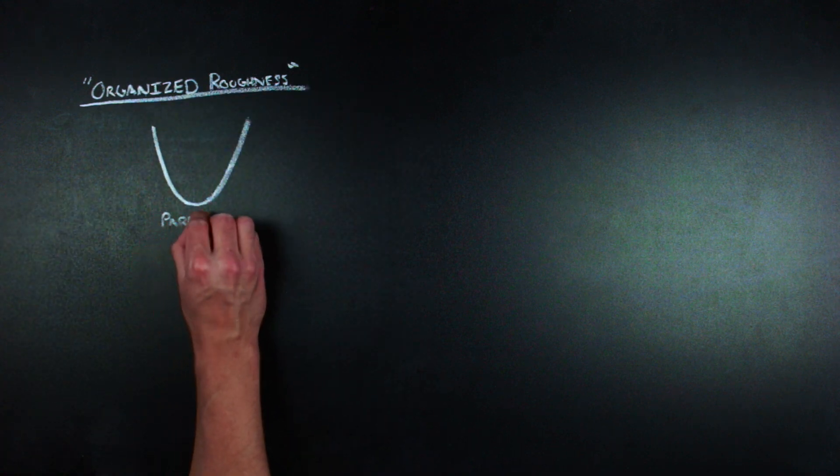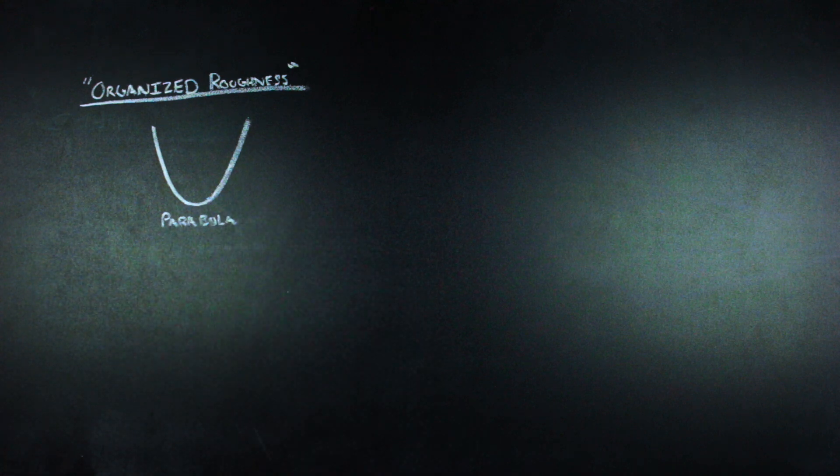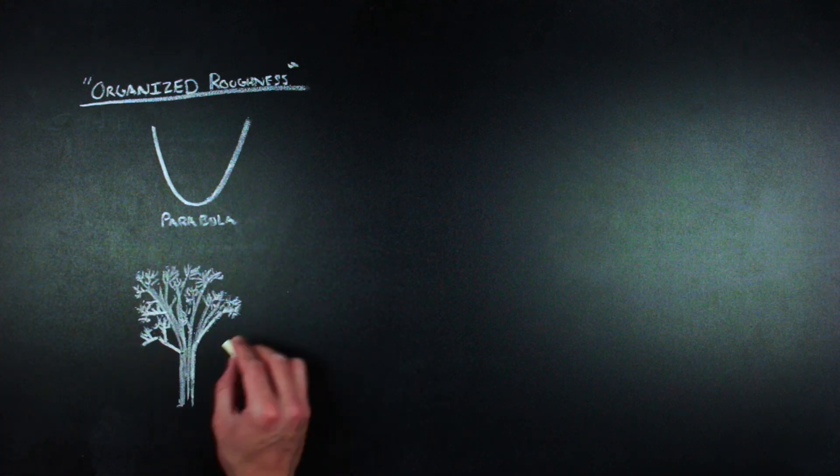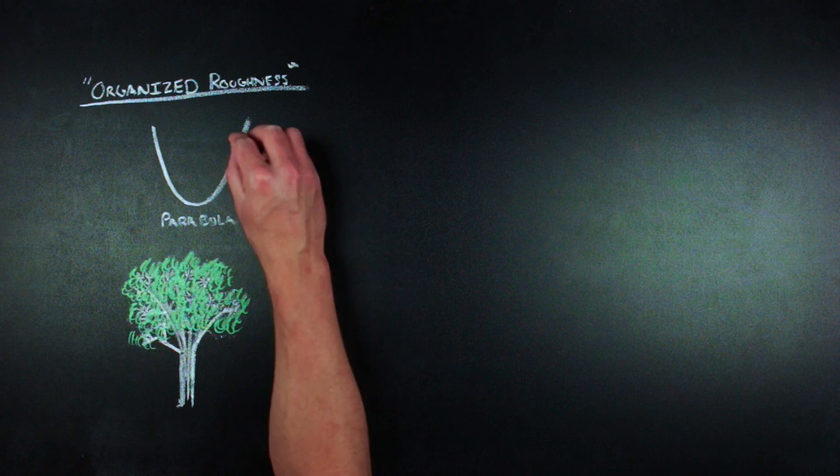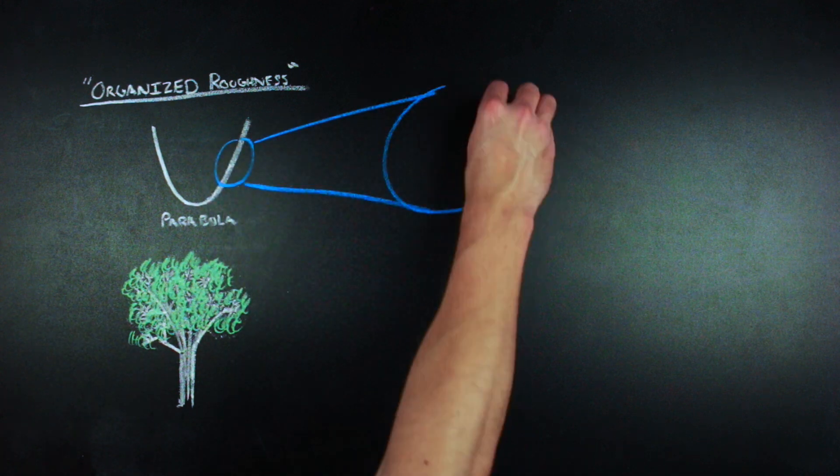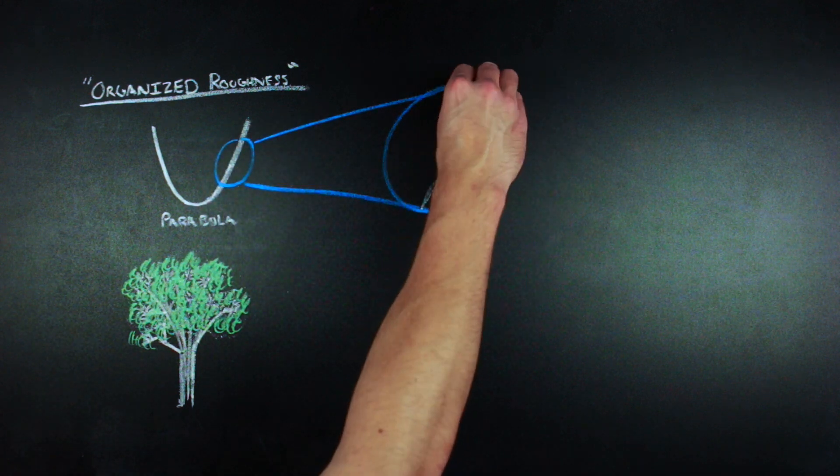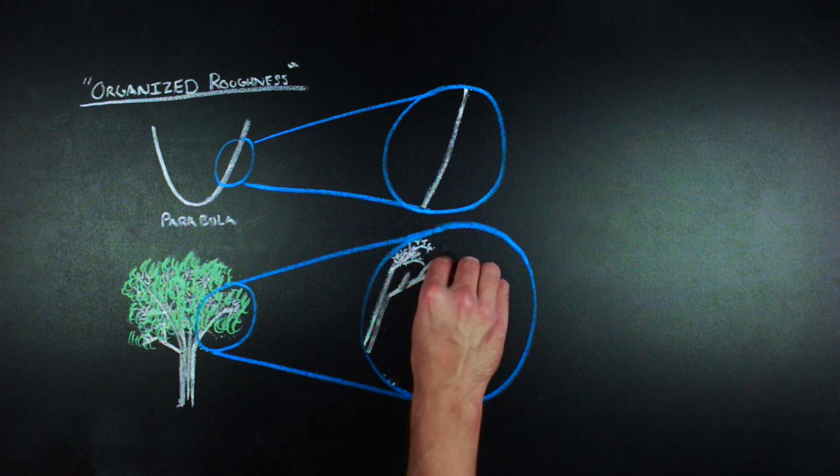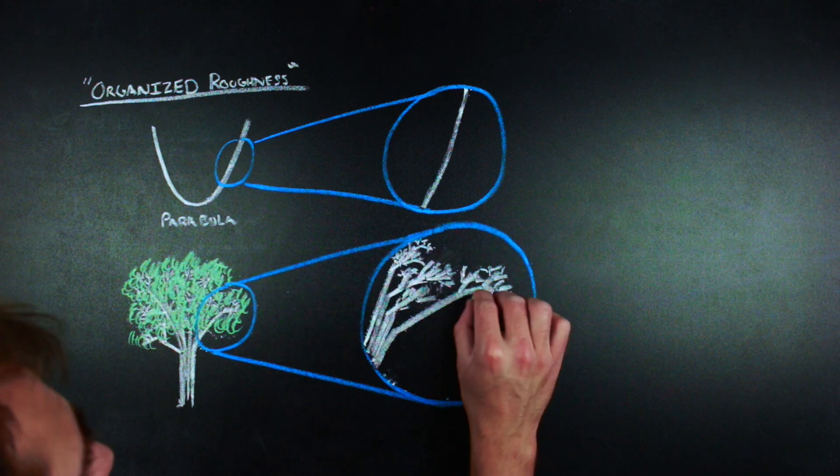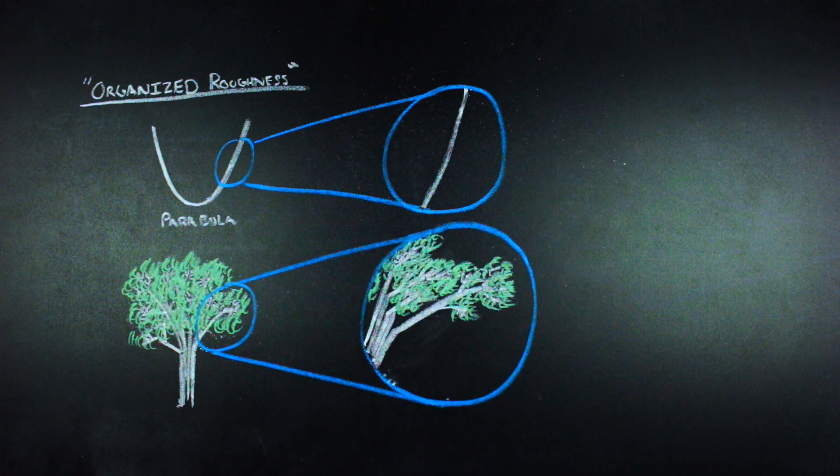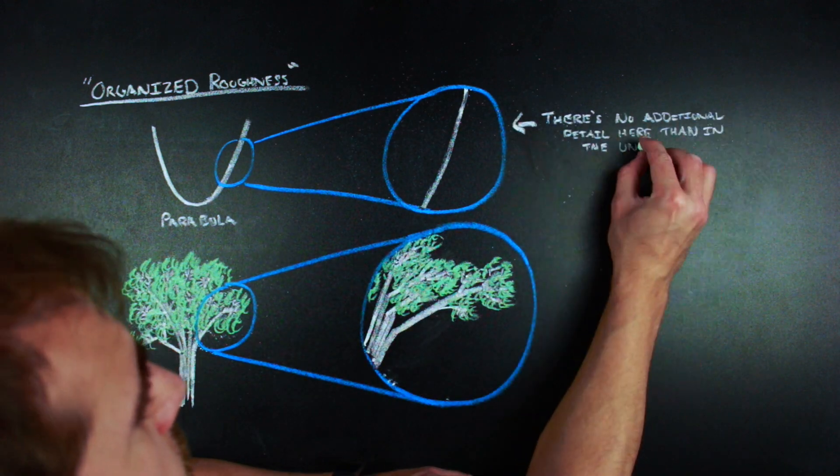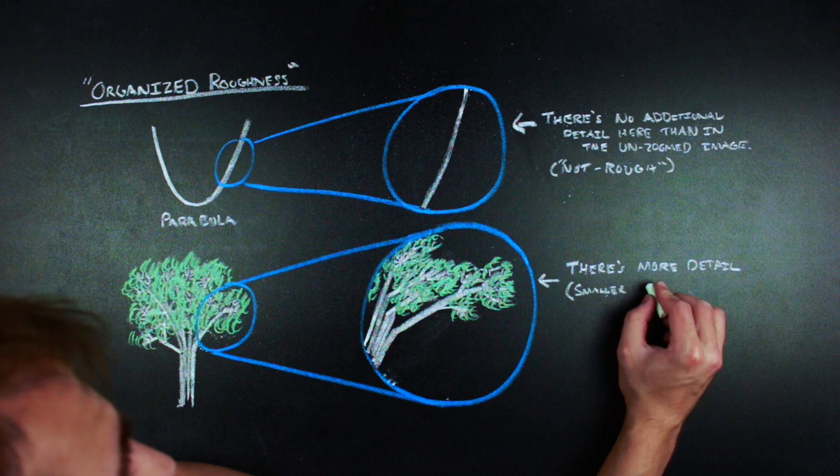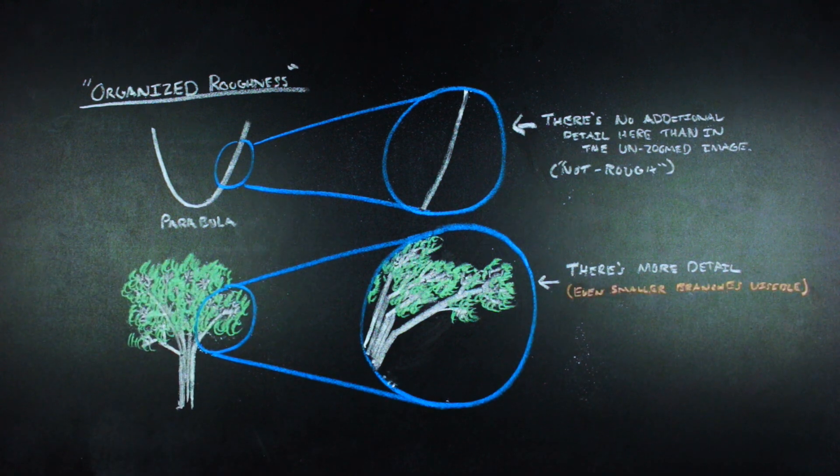To give an example, if we're looking at two things, one of them a curve, like a parabola, and the other a tree, as we zoom in on each object, in the parabola, we're not really able to make out any more detail. But when you zoom in on the tree, you can make out even more detail, as you can now see some of the smaller branches that you weren't able to before, and the smaller branches that branch off of those smaller branches, because recursion is a thing.